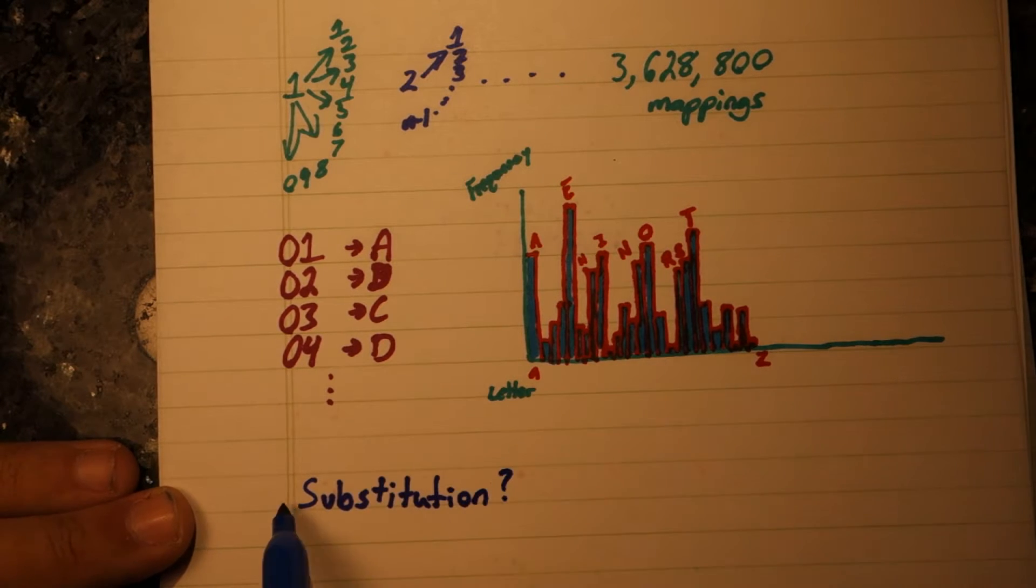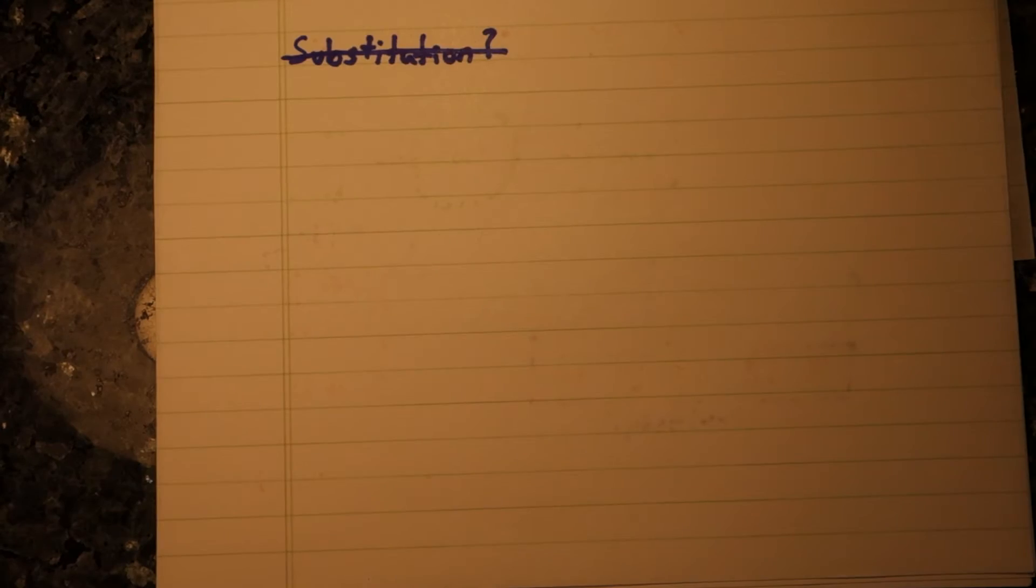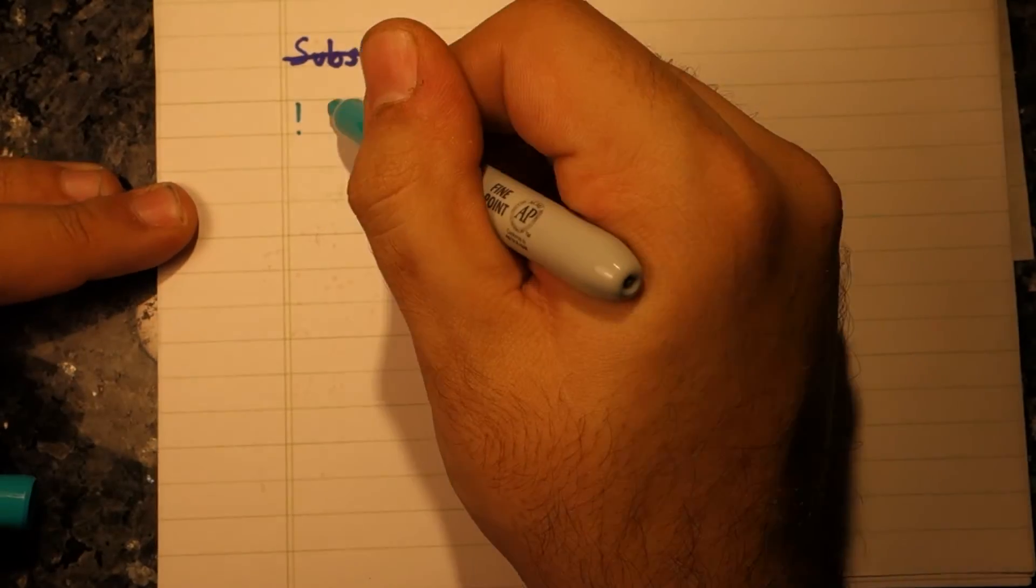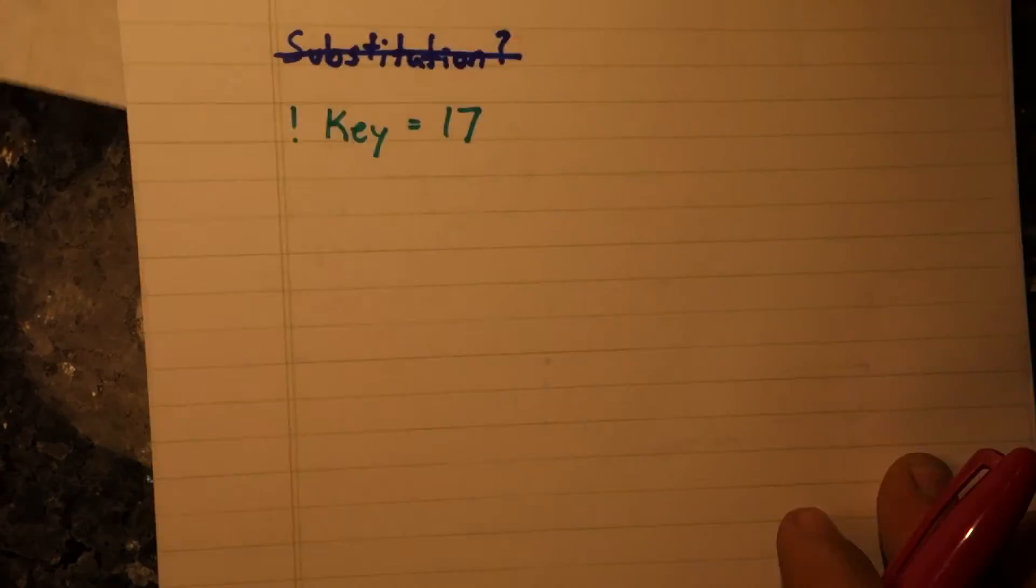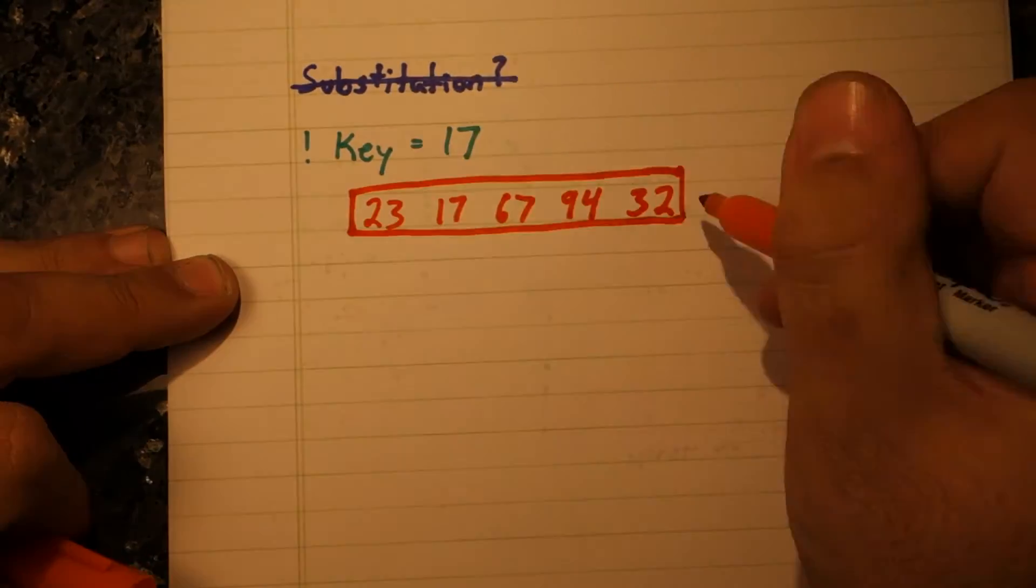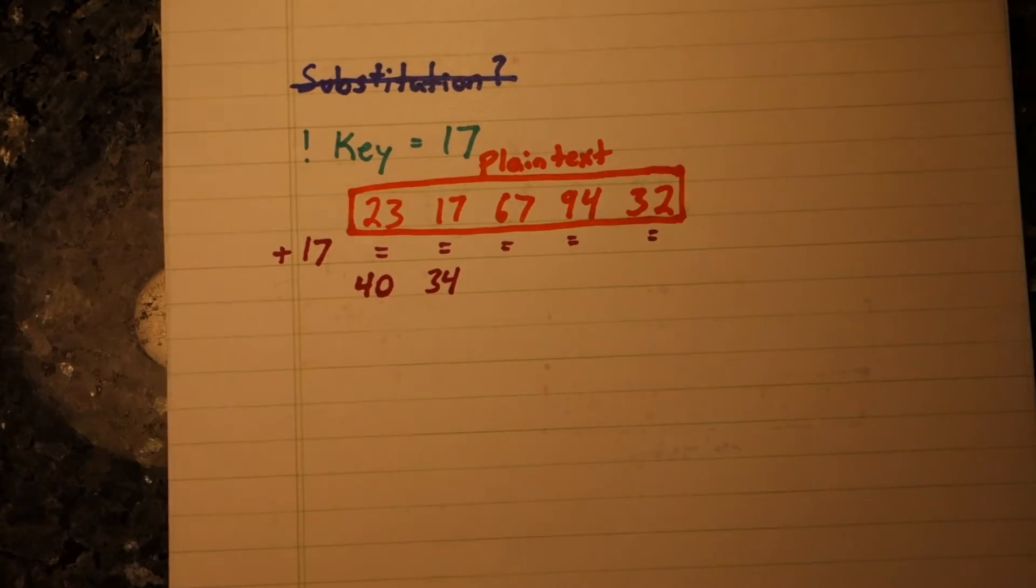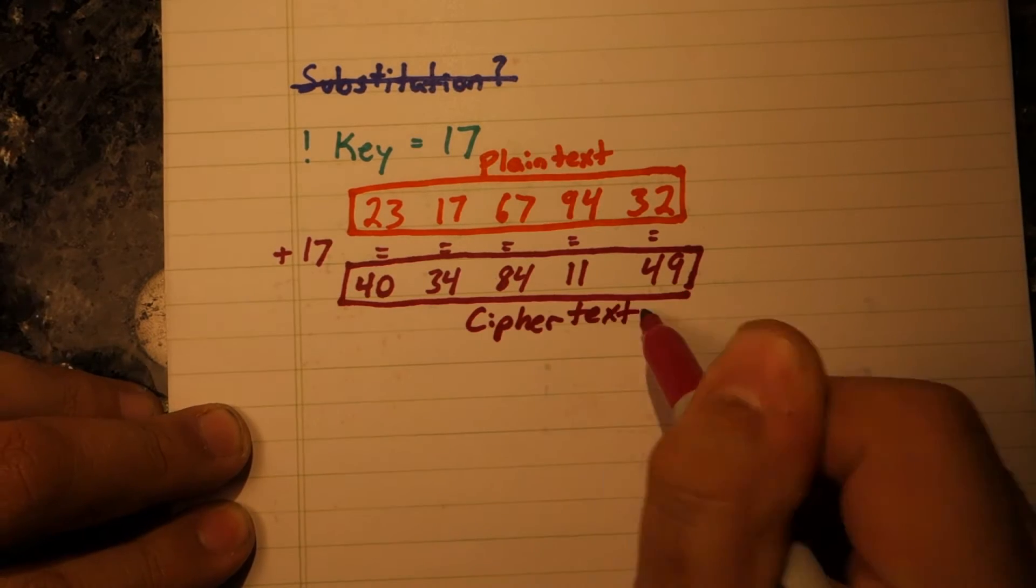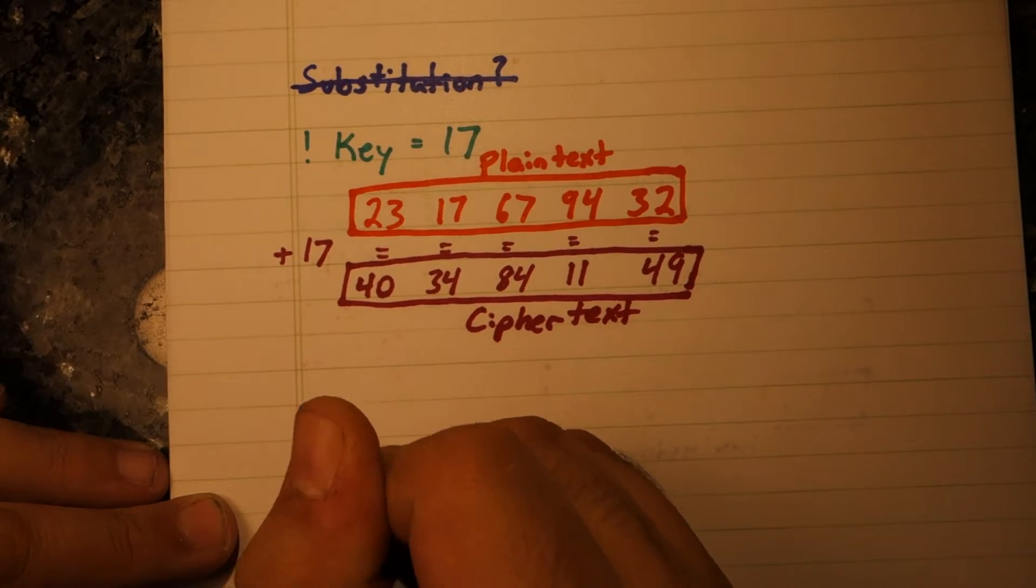So substituting numerals won't work. I know. Let's create a fixed number key. And then we add that key to each one of the numbers of our plain text. We can simply share this number key with our friend and we can communicate securely.